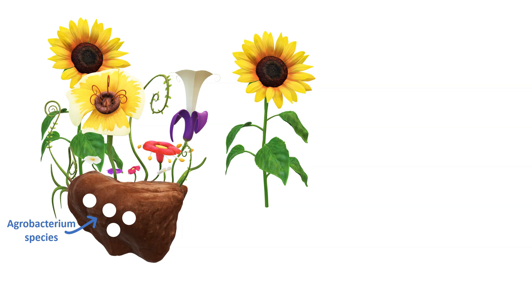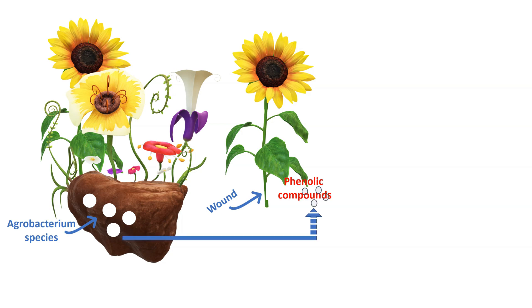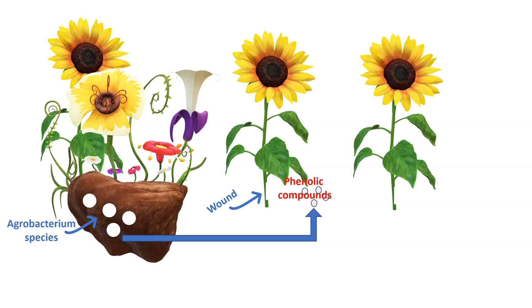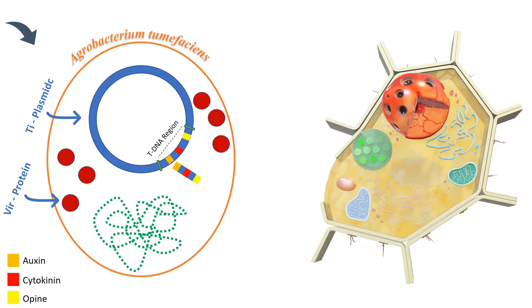This is supported by the mechanism where the plant gets a wound or cut, which results in the excretion of some phenolic compounds that attract Agrobacterium species. This becomes an entry point for the Agrobacterium to enter into the plant.